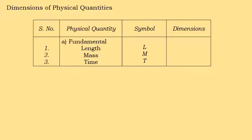Next, the dimensions of physical quantities. The first group is fundamental dimensions: length, mass, and time. The symbols used are L, M, and T — L for length, M for mass, T for time. These are called fundamental or primary quantities.